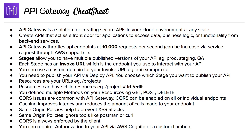Stages allow you to have multiple published versions of your API — so prod, staging, QA. Each stage has an invoke URL, which is the endpoint you use to interact with your API. You can use a custom domain for your invoke URL, so it could be something like api.exampro.co to be a bit prettier. You need to publish your API via the deploy API action, and you choose which stage you want to publish to.